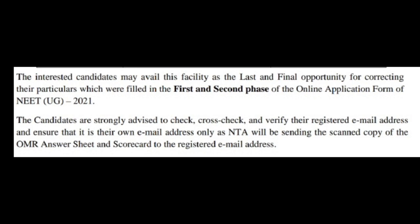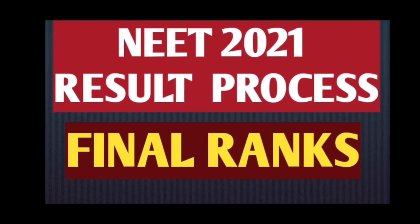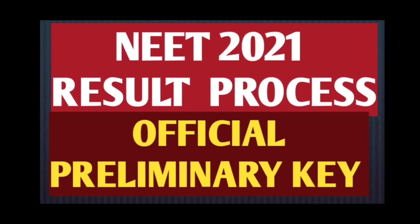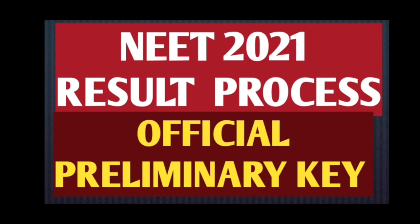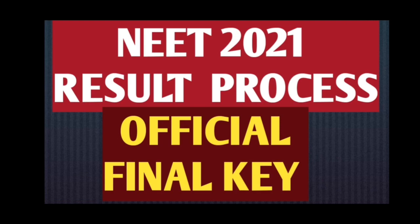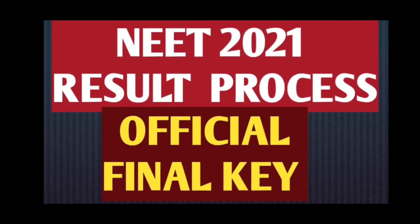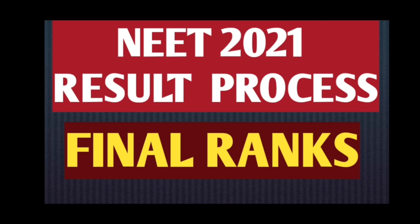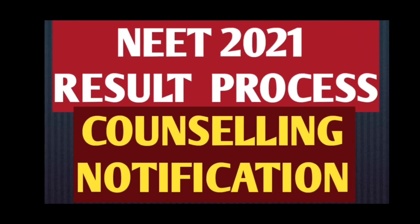Since 13th is the last date, after that they will lock the registered email IDs. The result is expected on the 15th — they will send you the OMR sheet on 15th or maximum by 16th. The preliminary recorded response is expected on 15th or 16th, followed by the official preliminary key on the same dates. The official final key is expected on 19th or 20th. Most probably by 21st, they will release the final ranking, and 21st itself may also see the counseling notification.